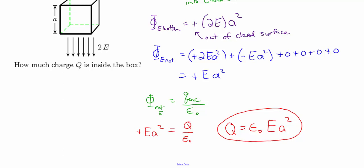Field lines point away from positive charges and towards negative charges. Since there is an overall net electric flux coming out of the box, there must be a net positive charge inside creating those outward field lines. This is a basic application of Gauss's law — relating flux through a closed surface to the enclosed charge. If we know the flux we can find the charge, and if we know the charge we can calculate the flux.